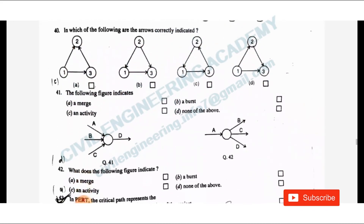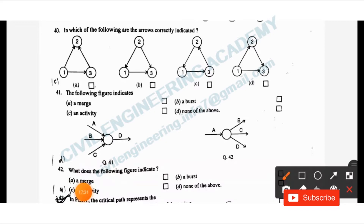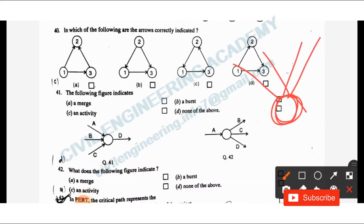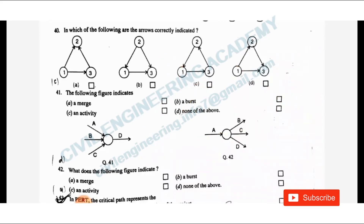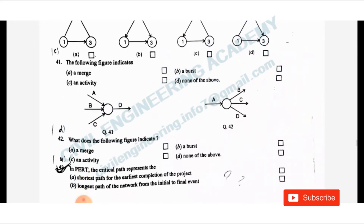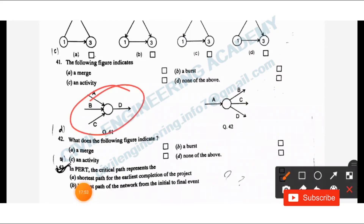Question 41: The following figure indicates merge or burst? Merging means multiple activities (from nodes 1, 2) converging into a single node 3 — this is merging. Question 42: the figure indicates burst, where one node branches out into multiple activities. So 41 is merge and 42 is burst.